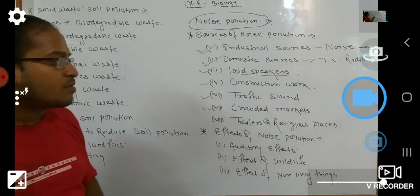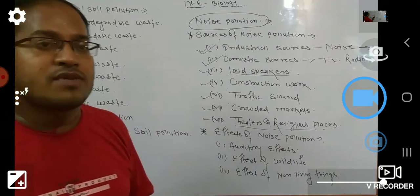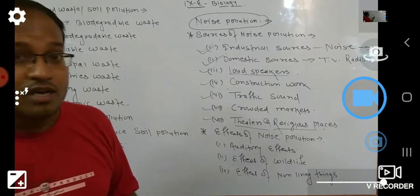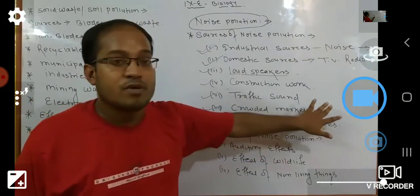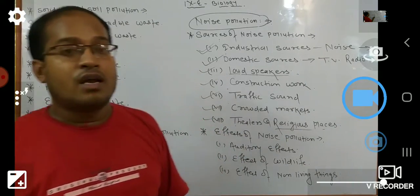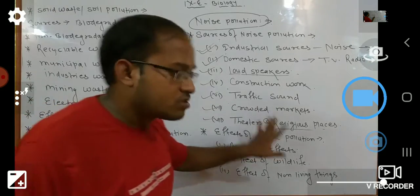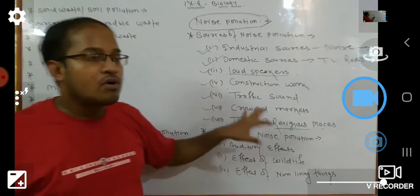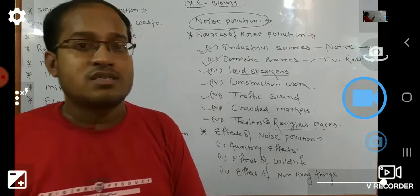The last source is theaters and religious places, where we use loudspeakers and sound boxes. We forget that this is also harmful for human beings, infant children, and old people. Loud sound from these places enters the minds of human beings and causes neuron damage and CNS damage, making a person unconscious. This is one of the most important diseases created by noise pollution.